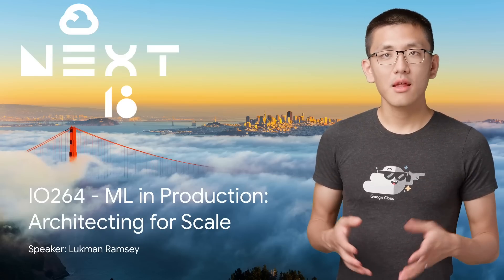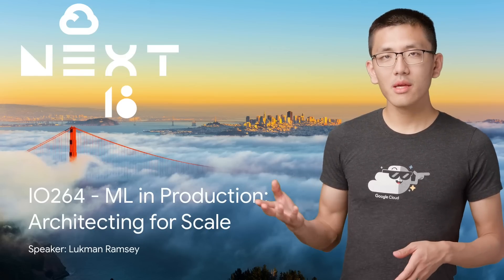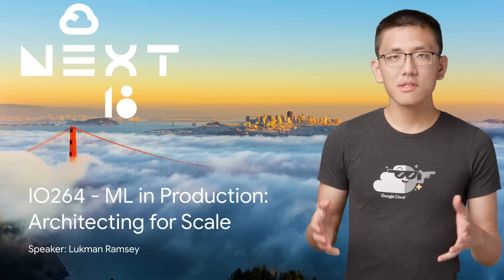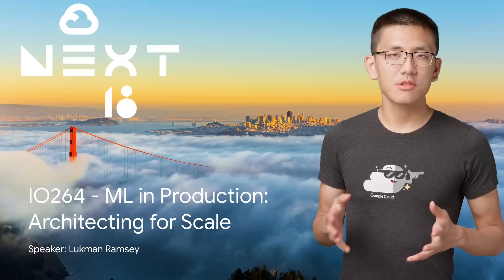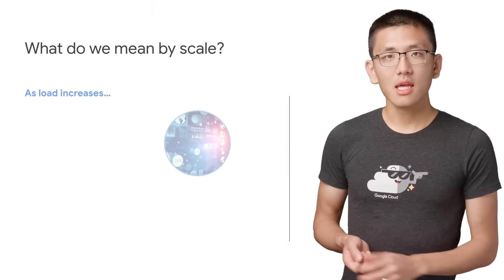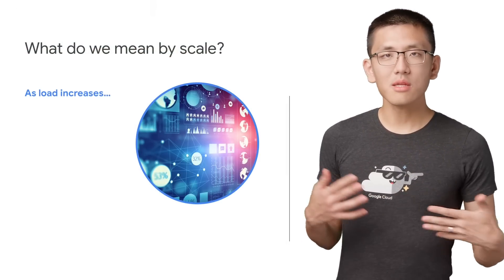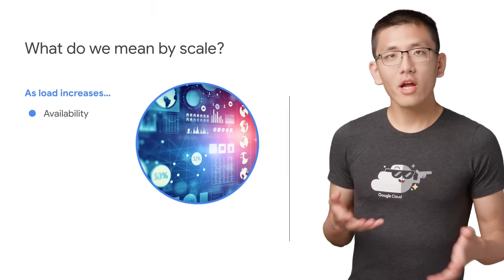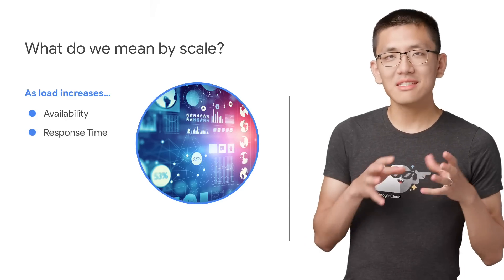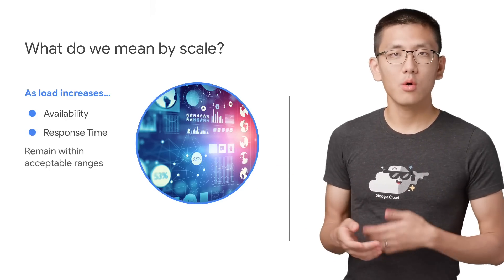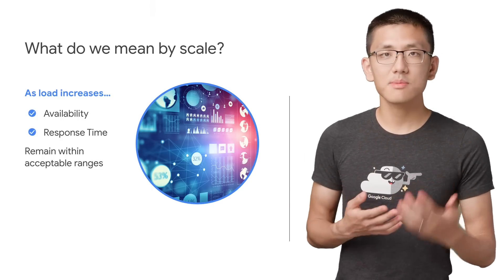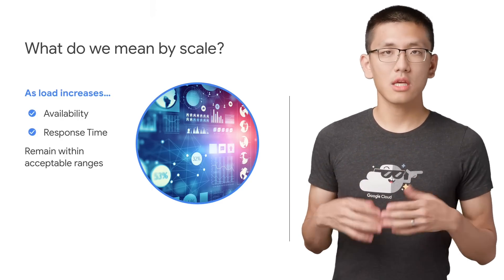When it comes to machine learning, there's ToyML and ProductionML. Both are very important, though different types of problems to solve for. And when we say scale, as it pertains to machine learning, it not only means the usual — you require additional servers — but also being able to scale up to more training data or bigger models, and not having reduced availability and response time when prediction load increases.